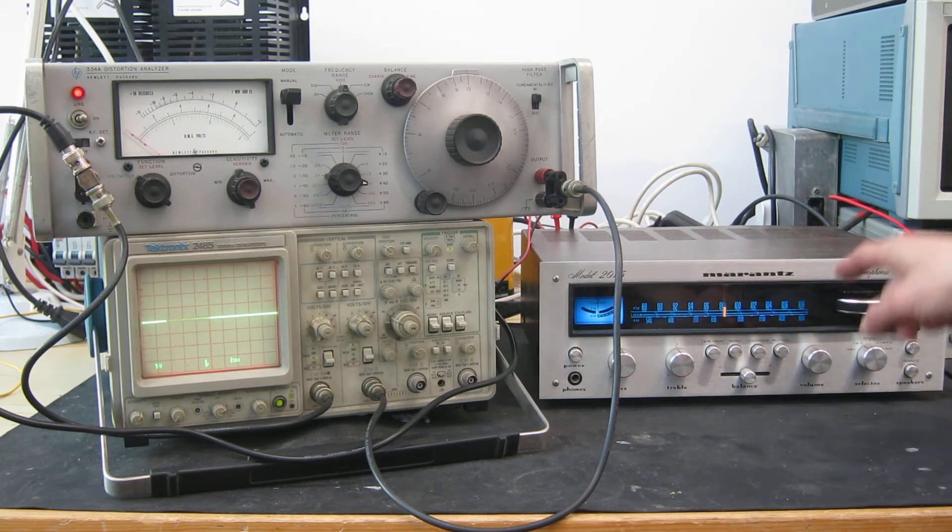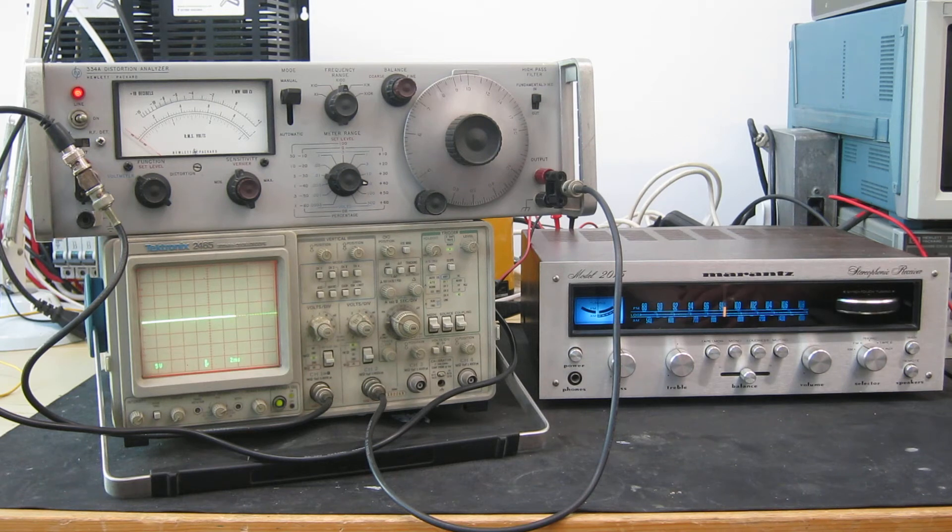It's got an FM radio, AM radio, and an amplifier all built-in. It's rated at 15 watts per channel and according to the spec it should be 0.9% distortion at that power output.